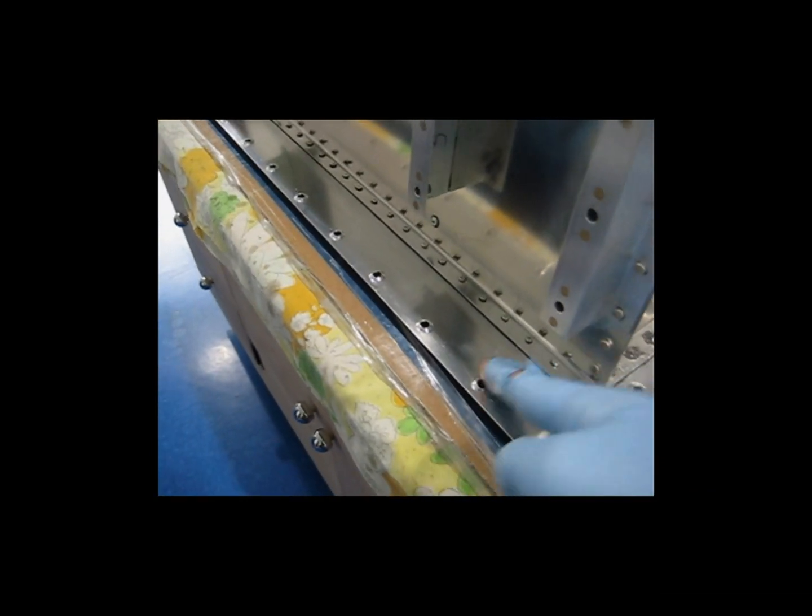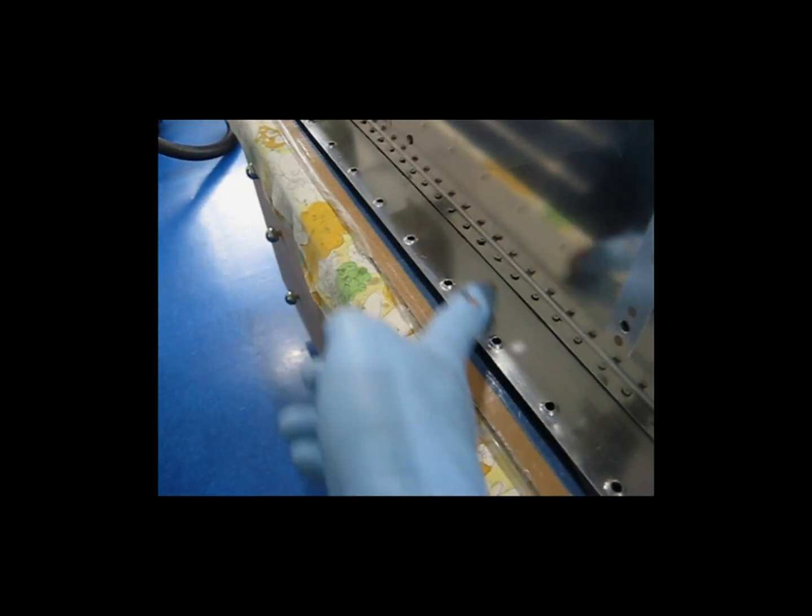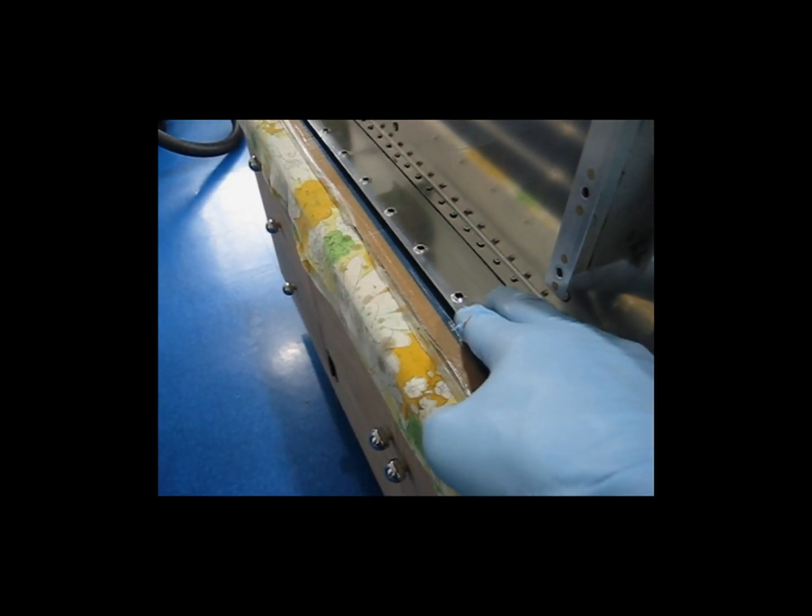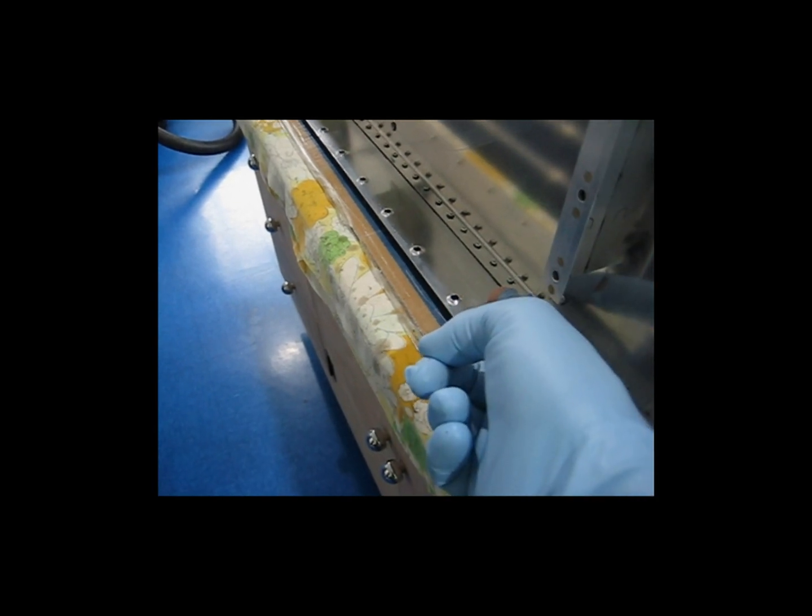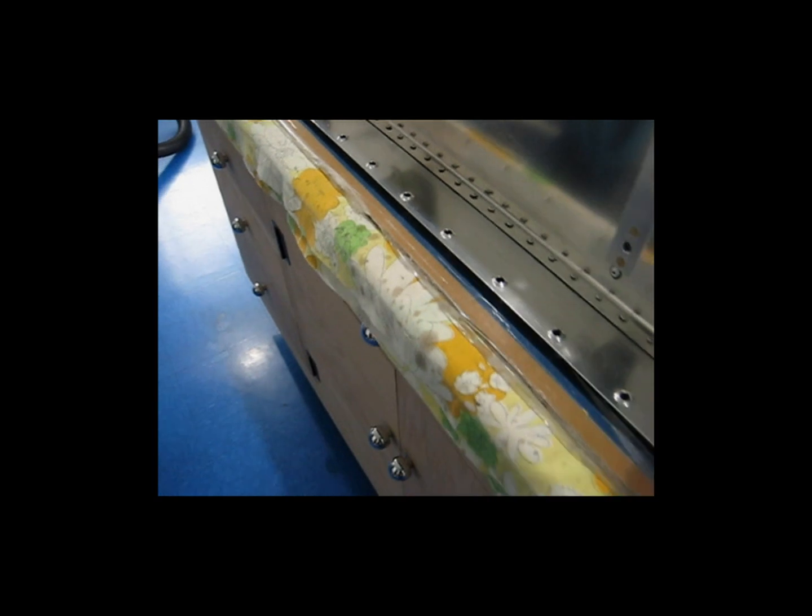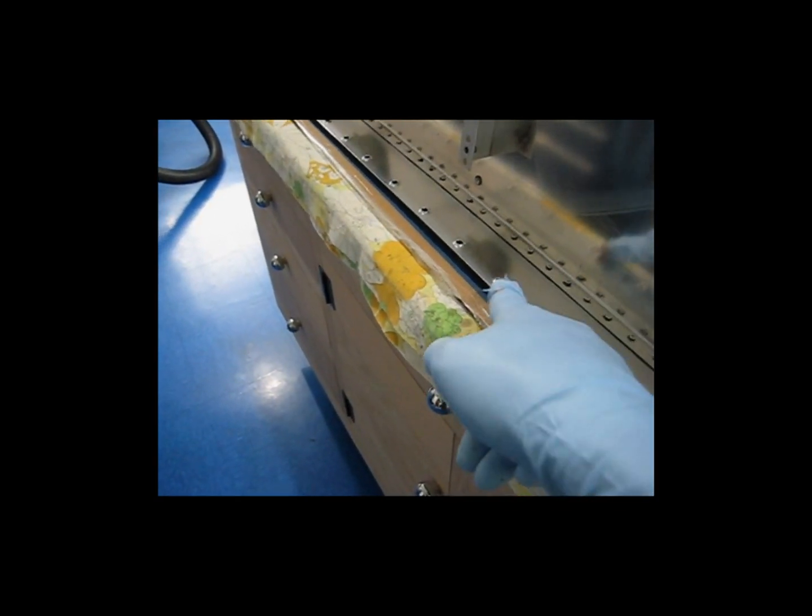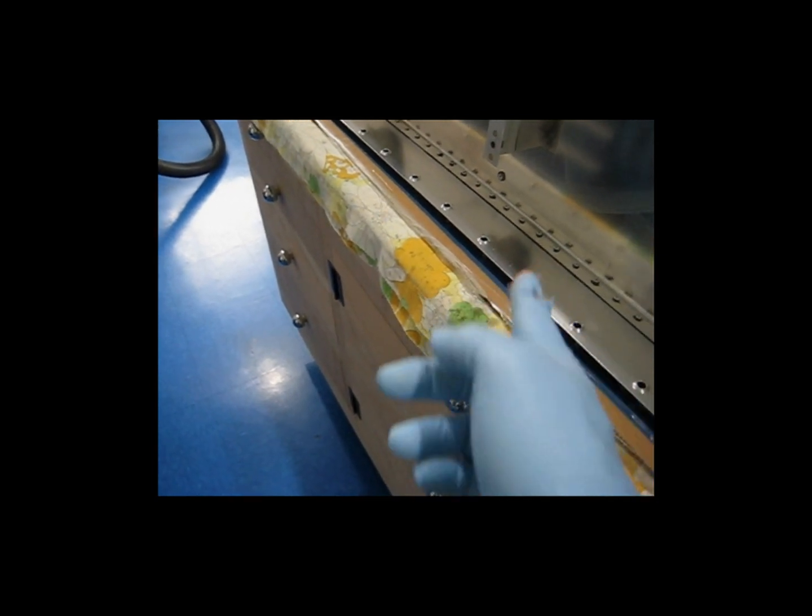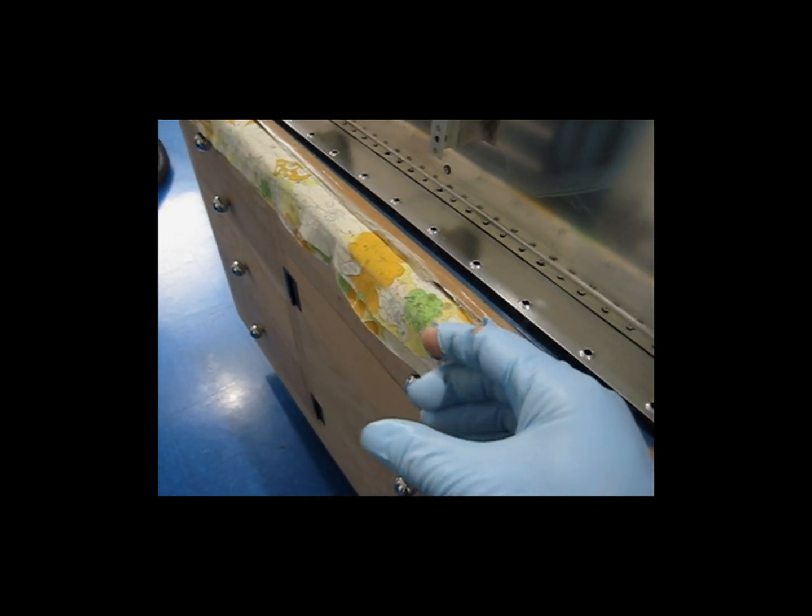This edge in here, this flat area in here, this is where the spar will be. The spar is pretty thick, it goes into here pretty deep. You want that area in here free of fuel tank sealant. And again, the dimples, both on this side and on this side, you want clean so everything will nest and bolt together nicely.